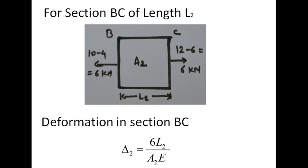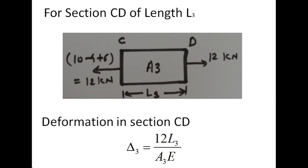For the second section BC with cross-section area A2 and length L2, the net force at the left side is 10 minus 4, which equals 6 kN, and the net force at the right side is 12 minus 6, which also equals 6 kN. So the net force at section BC is 6 kN and the total deformation of section BC is 6·L2/(A2·E). For the third section CD with area A3 and length L3, the net force at the left side is 10 minus 4 plus 6, which equals 12 kN.